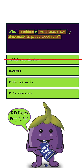How about B? Technically, anemia can be characterized by large red blood cells or small red blood cells. So this is a generally correct answer, but it's also ambiguous. The question is asking for which condition is best characterized, and that word 'best' is our clue that maybe this isn't the best answer because it's general. Let's bank this answer and move on to C.